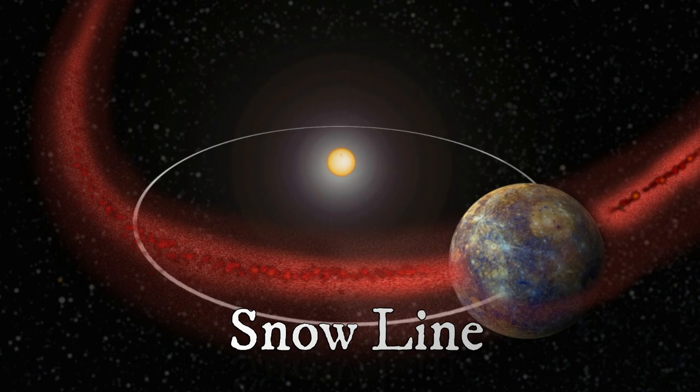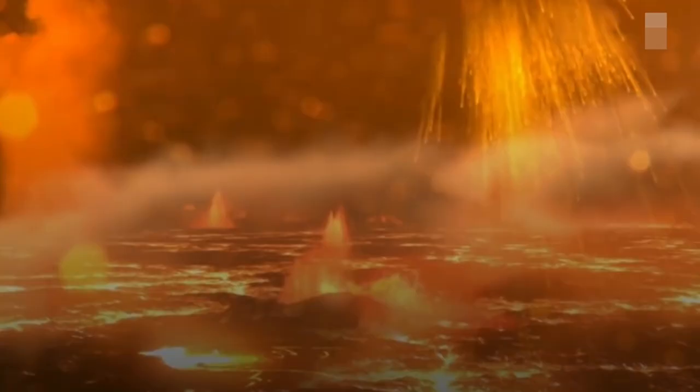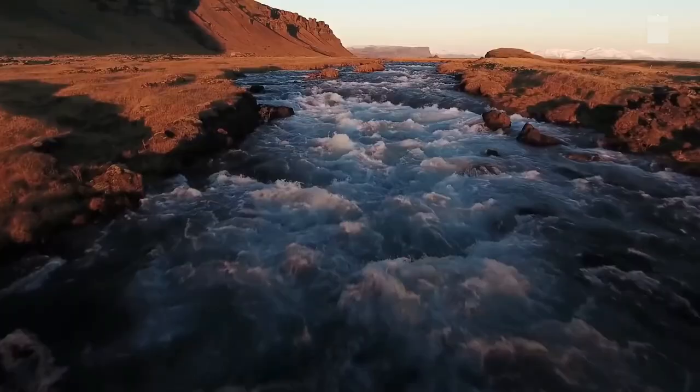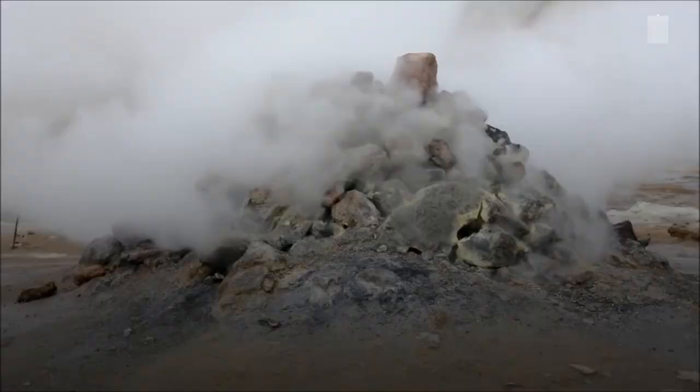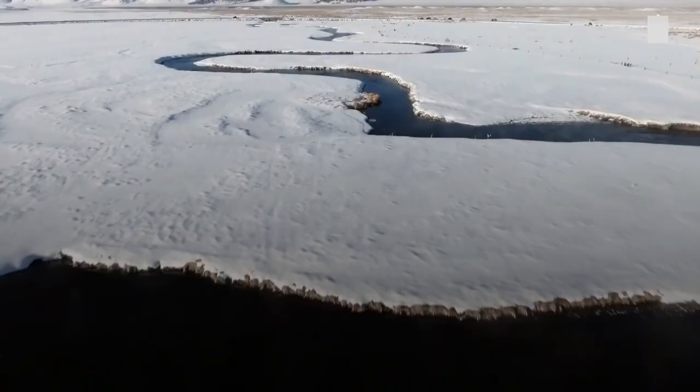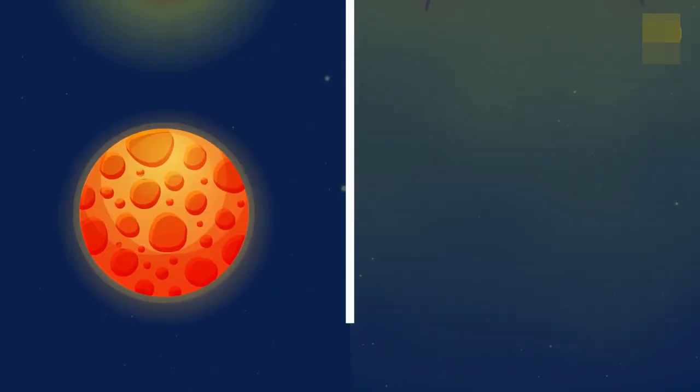In the Barnard Star system, though, this distance is near the star's snowline. That is, the point where heat from Barnard Star needed to keep water molecules as vapor ends. Past the snowline, water can become ice.